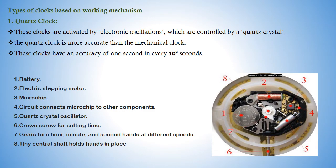Types of clocks based on working mechanism: Quartz clock - these clocks are activated by electronic oscillations which are controlled by quartz crystal. The quartz clock is more accurate than the mechanical clock. These clocks have an accuracy of 1 second in every 10 to the power 9 seconds.